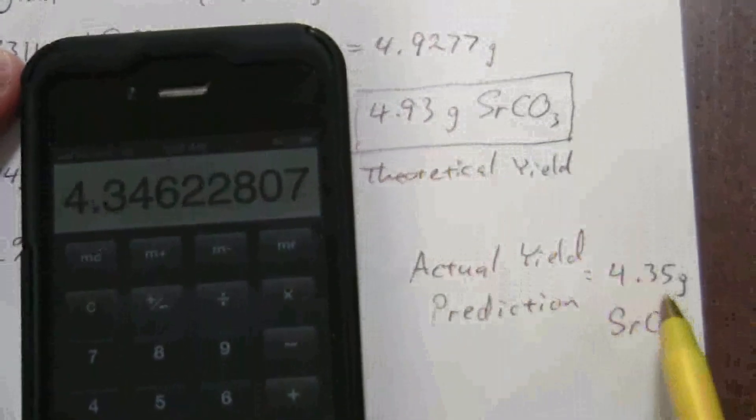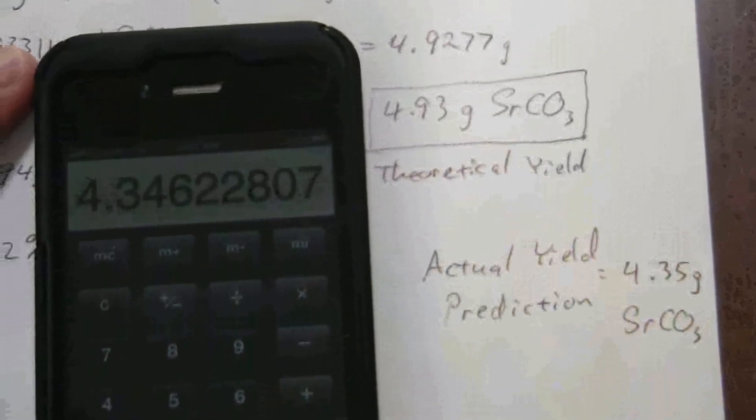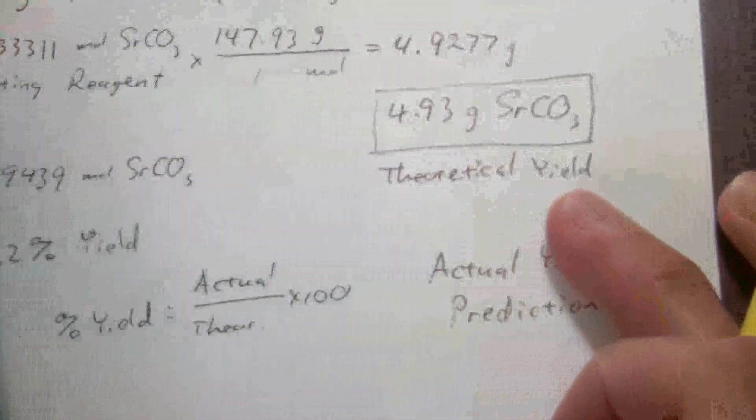Verify that it has to be less than the theoretical yield, because I can't collect more than I can theoretically produce.